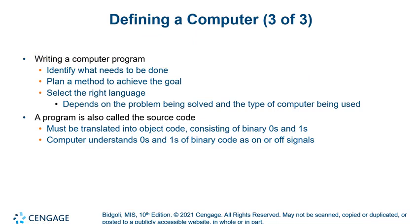Somebody has to write a computer program — I'm guessing about a quarter of you have written some kind of program. The first thing before you write anything is: what do I need to do? You start by defining the output — what are you trying to achieve — and then go back and figure out the method to get there. You have to select the right language, and there are many different languages, each with a different purpose. Some are better for the internet, some are better for working with physical objects like guiding a robot.